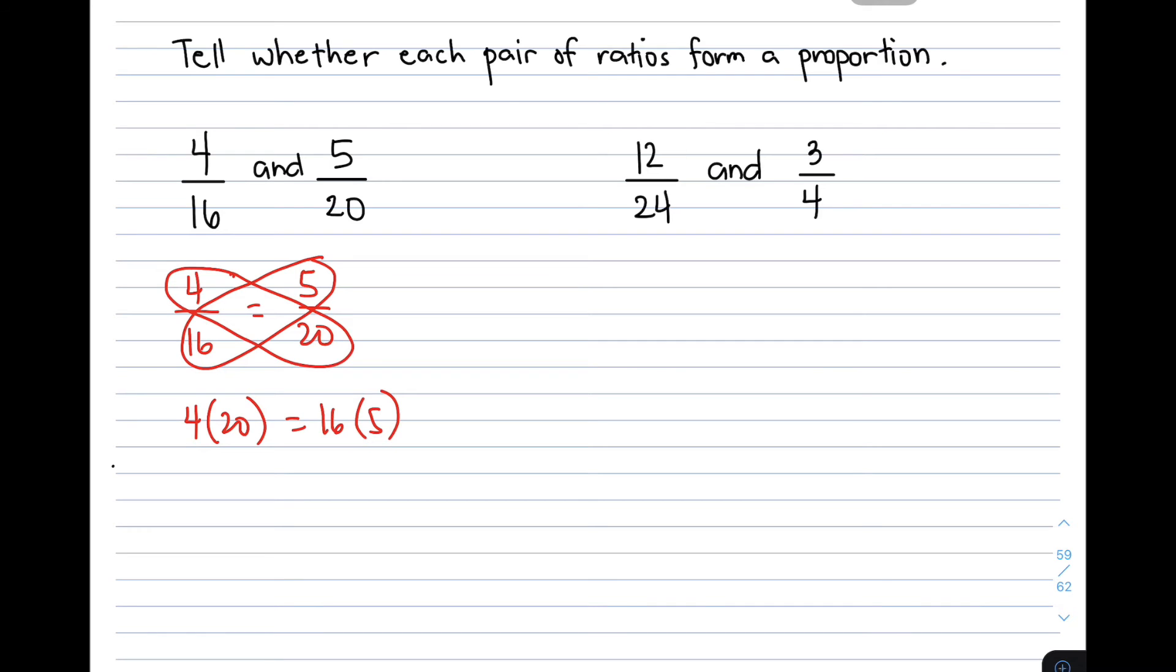So 4 times 20, we know that is equal to 80. And then 16 times 5, it will give you also 80. Since the two products, or the product of your means and the product of your extremes are equal, meaning this is a proportion. 4 over 16 and 5 over 20 can form a proportion.